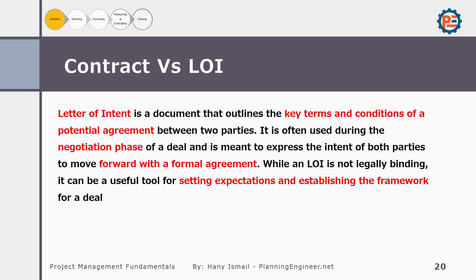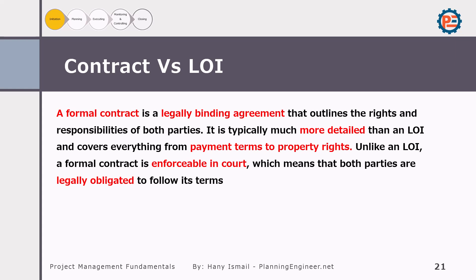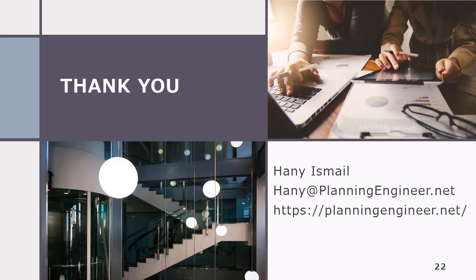Understanding the difference between an LOI and a contract is important. The letter of intent is not legally binding but is useful for setting expectations and establishing a framework for the final agreement. A formal contract, however, is legally binding. A contractor might start talking with banks, subcontractors, and employees upon receiving an LOI — making interviews, collecting prices — but cannot take action on the ground without a signed contract. Once the contract is signed, hiring, issuing bank bonds, and purchasing goods can begin.